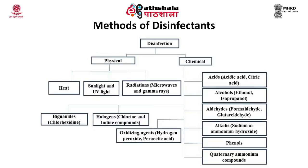Disinfection can be achieved either by a physical process or a chemical process. The physical process involves heat treatment and treatment with UV light or other radiations, where microwaves and gamma rays are used. In the chemical process of disinfection, alcohols, aldehydes, phenols, quaternary ammonium compounds, halogens, and oxidizing agents are used to achieve disinfection.